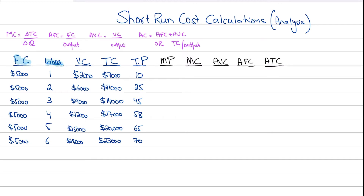We have our labor, which is a variable factor in the short run. It keeps on increasing from 1 to 6 as we keep on scaling up our output.